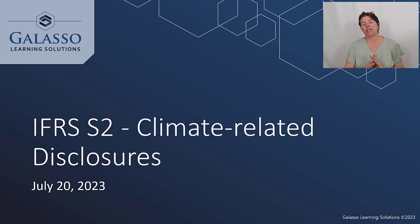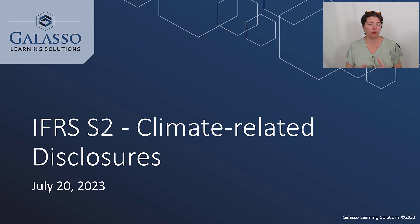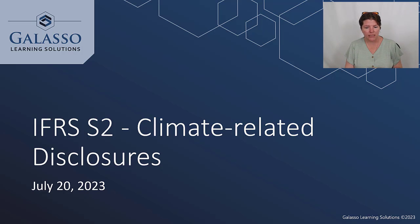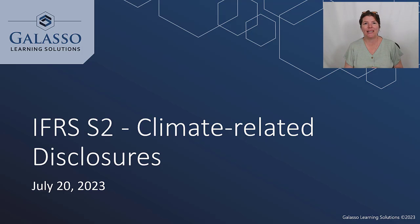S1 gave us the overall framework for sustainability disclosures coming out of IFRS. These disclosures can be used regardless of the financial reporting framework you're using, so you can use US GAAP and then apply these sustainability disclosures. Obviously, you can also prepare them in accordance with IFRS standards. They're written for for-profit entities, but nonprofits and governmental entities could choose to do this as well.